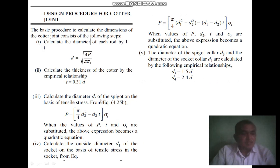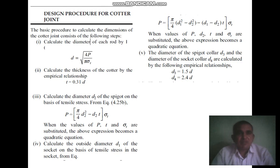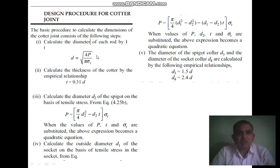These are the various failure modes present in cotter joints. This is the typical process to design cotter joints against static load conditions. The basic design procedure consists of the following steps. The first step is to calculate the diameter of each rod using the equation: d = √(4P / (π × σt)).